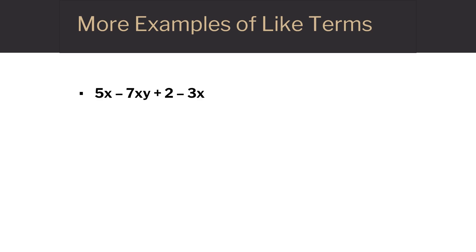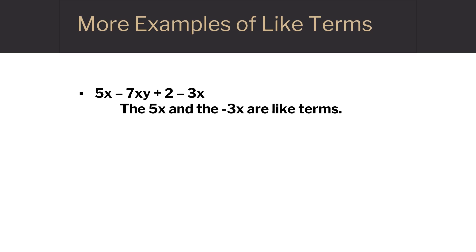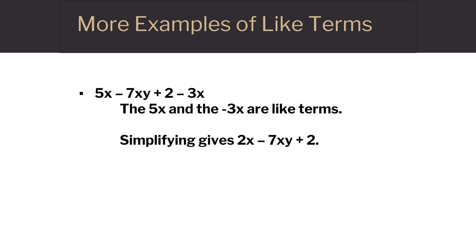For 5x minus 7xy plus 2 minus 3x, we need to combine the like terms. 5x and negative 3x are like terms: 5 minus 3 is 2, so that simplifies to 2x. Carry down the other terms: minus 7xy plus 2.